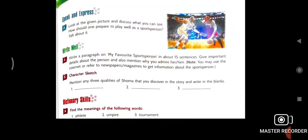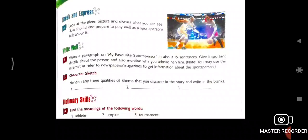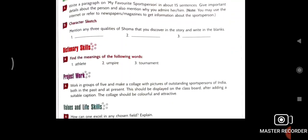And after that, in the writing section, you have to write your favorite sports person in 15 sentences. You have to write your favorite sport person. And you have to mention also. Maybe you will get more information on newspaper, you will get maybe magazine or anywhere. You have to write. And character sketch. What? Mention any three qualities of Soma that you discovered in the story and write in the blanks. What are the characteristics of Soma? You have to write only three qualities. Three column is there, completed. And after that, dictionary skill. You have to find out the meaning of the following words: athlete, umpire, tournament. Project work I will give you next time.